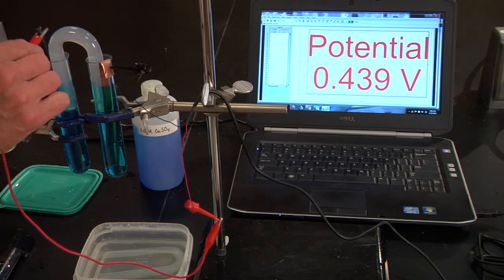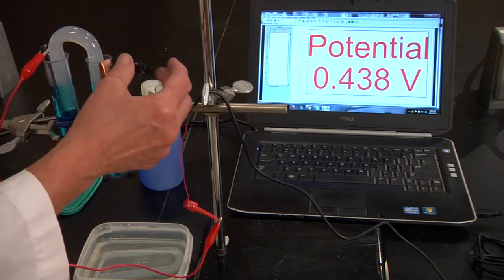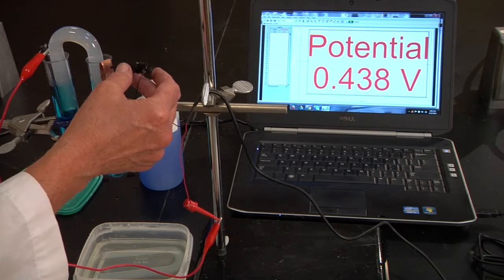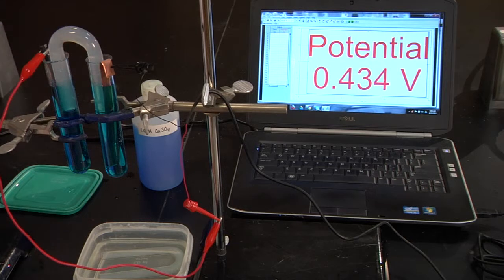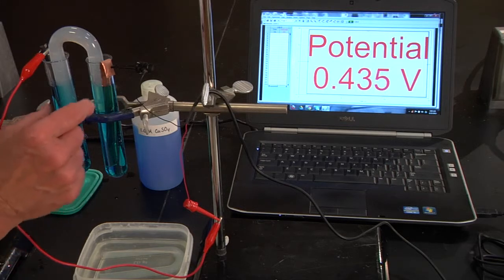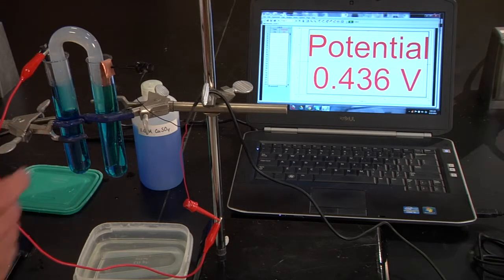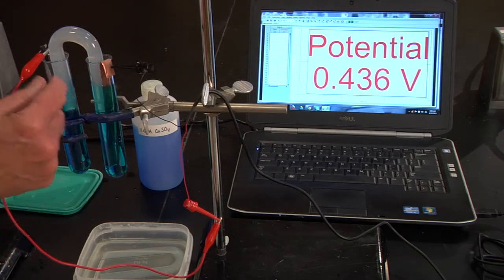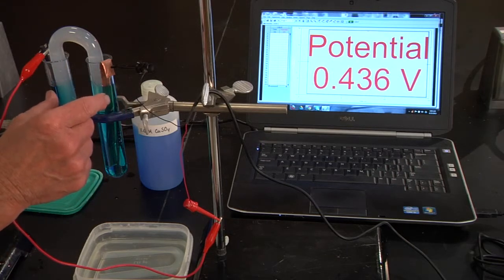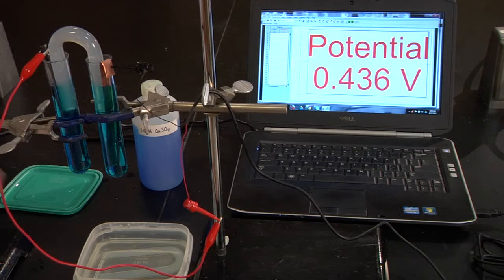Once we have connected our graphite electrode and our copper electrodes, you can see that we have 0.43 volts of potential difference between each of the test tubes. So there's a driving force. There's enough energy that is created by the potential difference between these two test tubes to give us 0.4 volts.